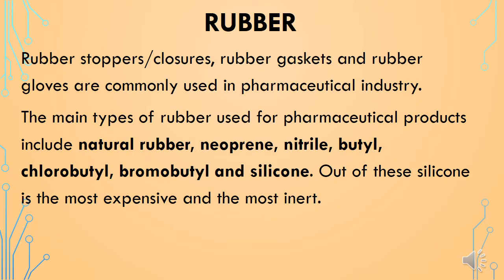Rubber stoppers or closures, rubber gaskets, and rubber gloves are commonly used in the pharmaceutical industry. The main types of rubbers used in pharmaceutical products include natural rubber, neoprene, nitrile, butyl, chlorobutyl, bromobutyl, and silicone. Out of these, silicone is the most expensive and the most inert one.